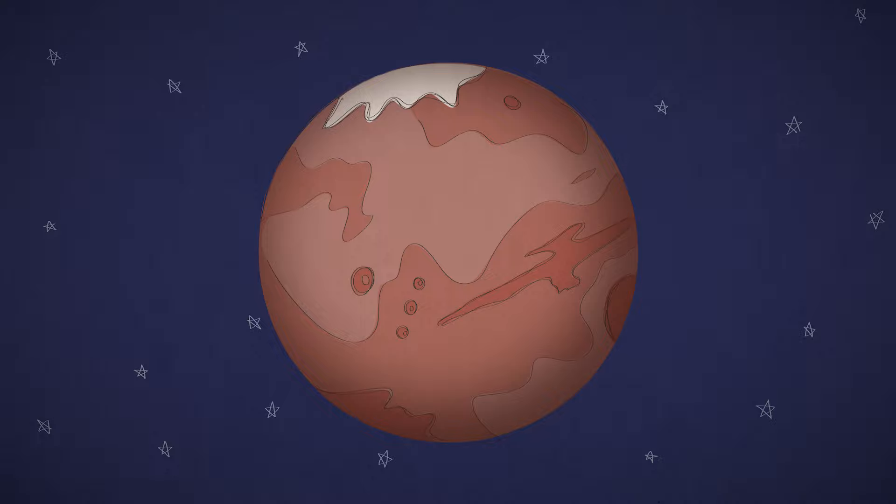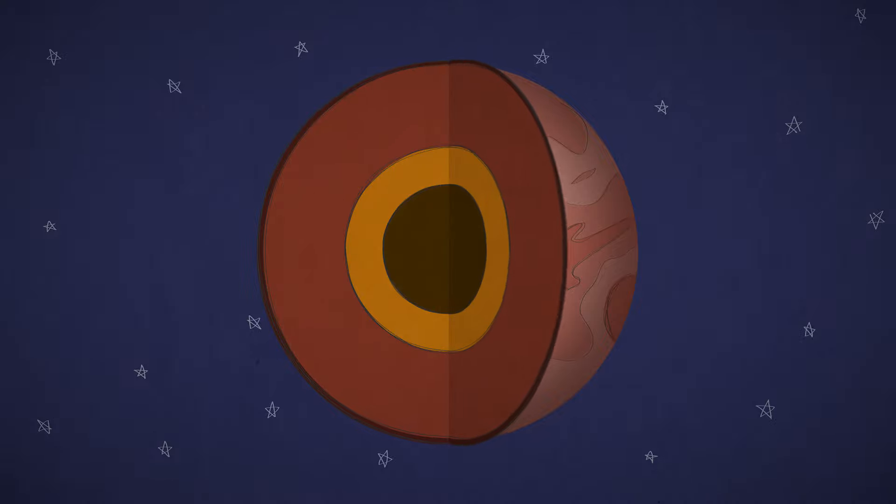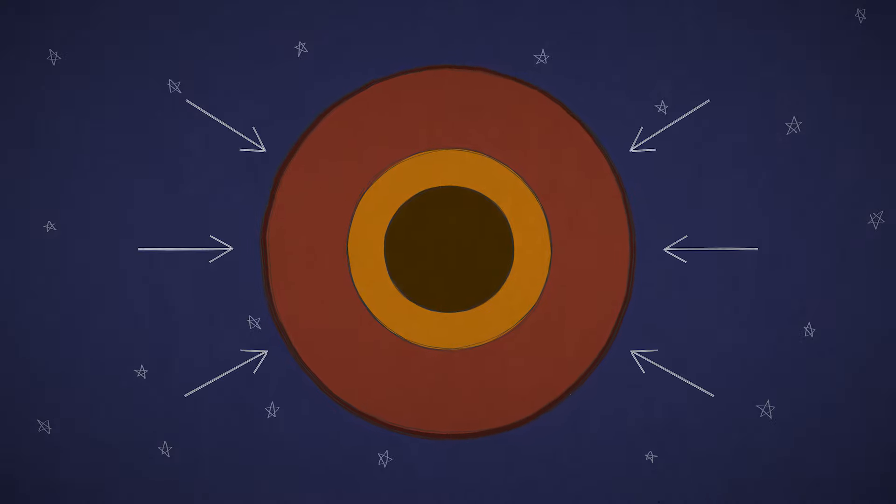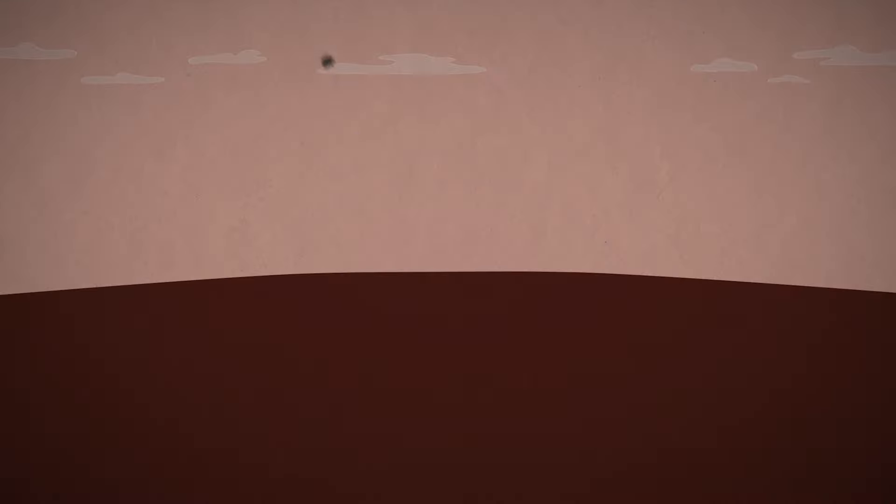Mars doesn't seem to have plate tectonics, but other things can make the ground shake too, like cracking caused by contraction from cooling, magma moving and creating pressure deep underground, or even meteorite impacts.